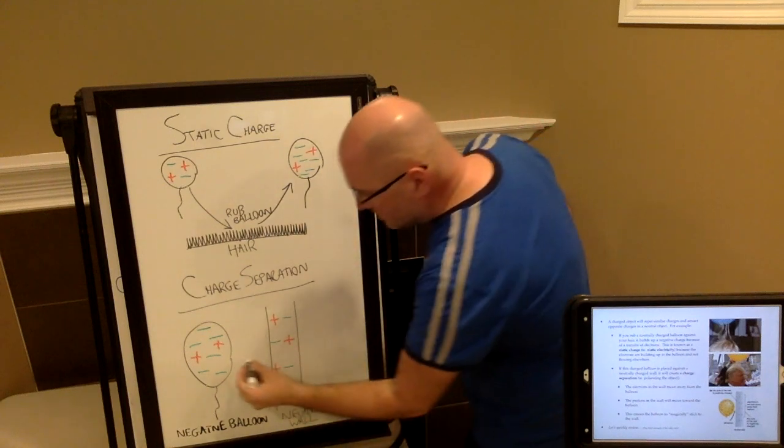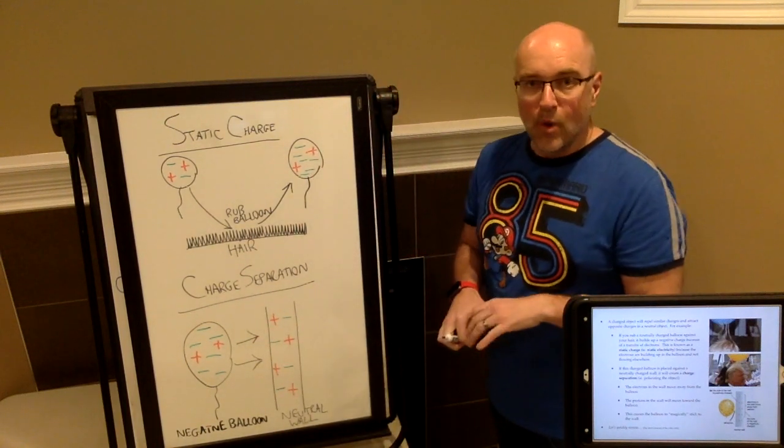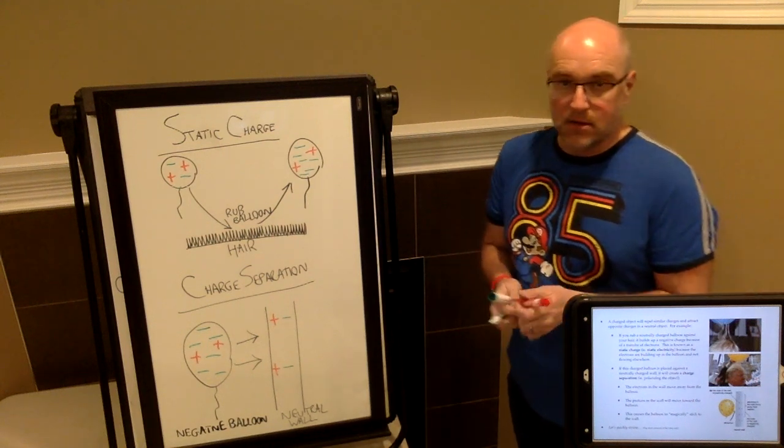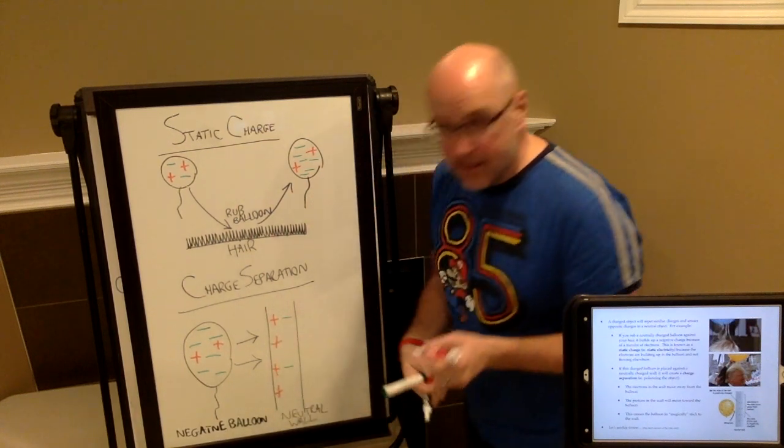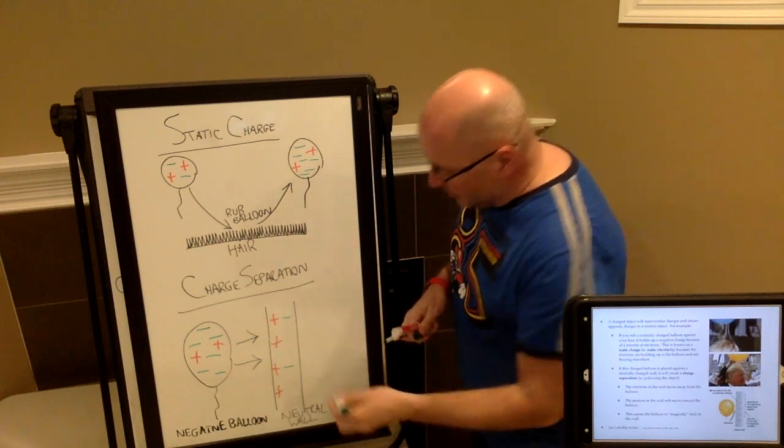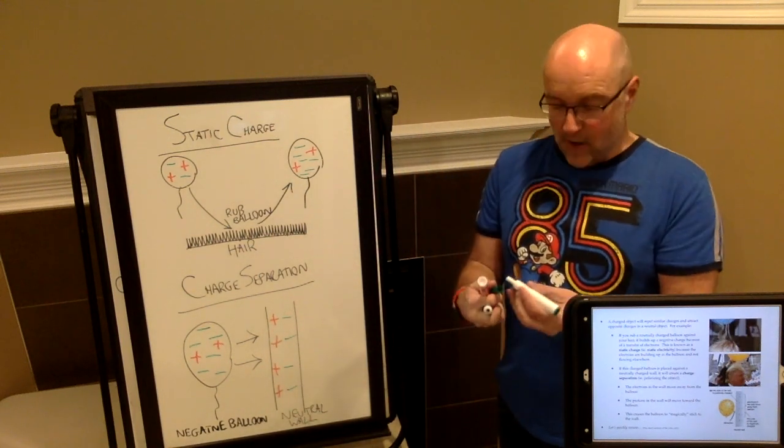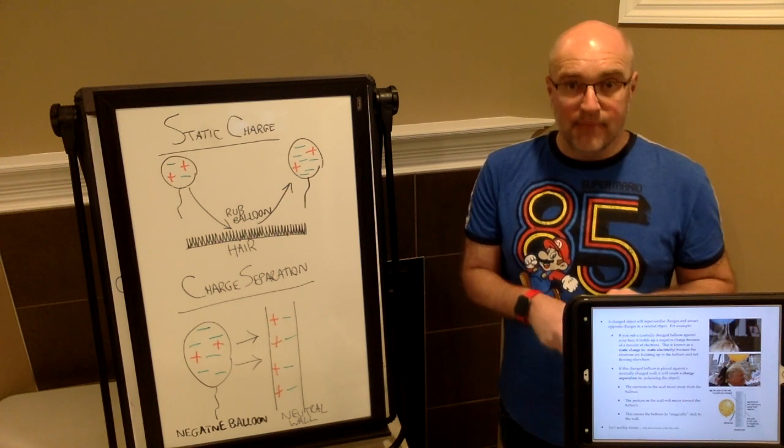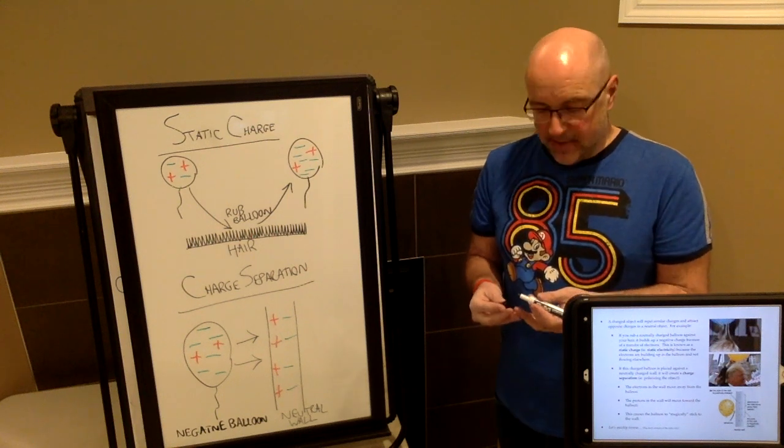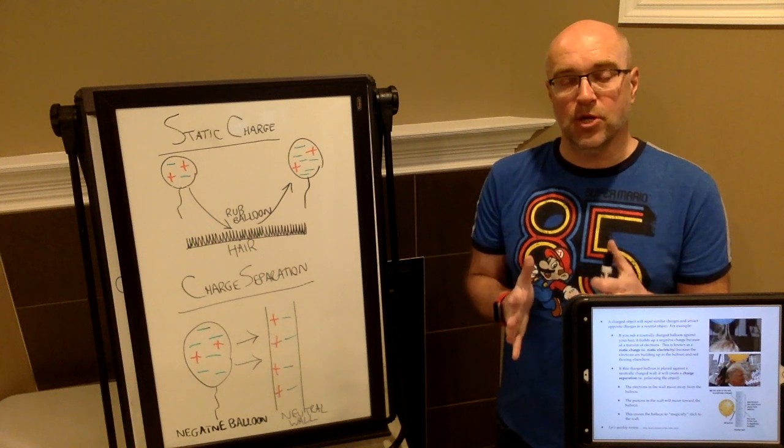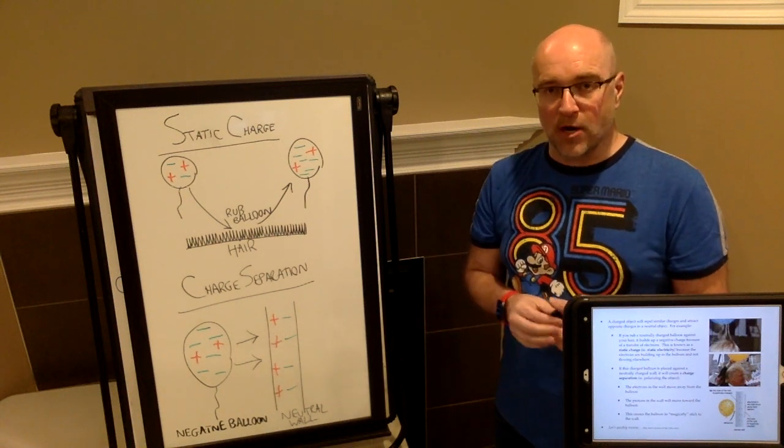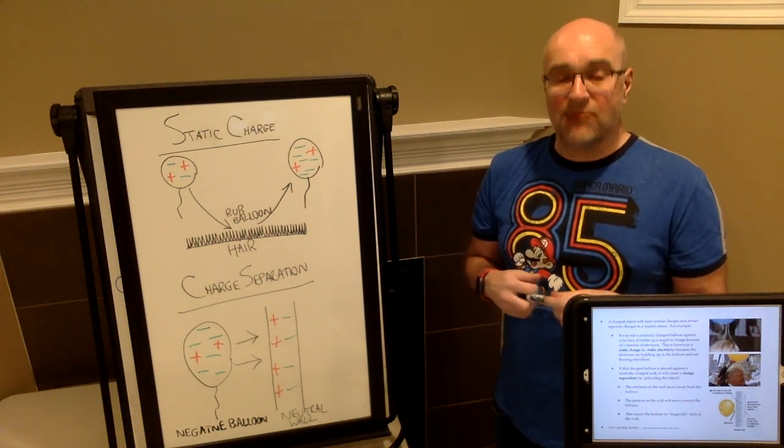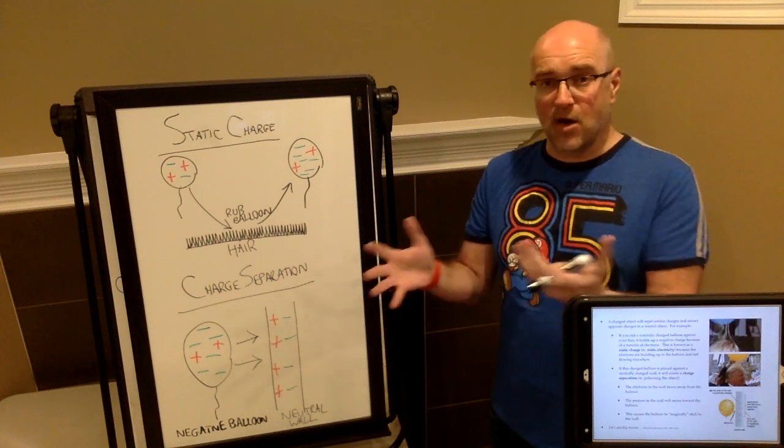When you take that balloon and move it toward the wall, the positive and negative particles in the wall will begin to align. The positive charges in the wall, which are attracted to the balloon, will move closer to the balloon, whereas the negative charges in the wall will move further away. We've separated the charges in the wall. That's why the balloon will stick to the wall, because the positive charged particles in the wall are closest to the balloon. We're not giving the wall a charge, we're just separating the charges, and that's what's creating the attractive force.